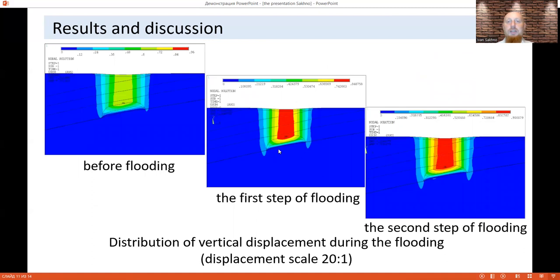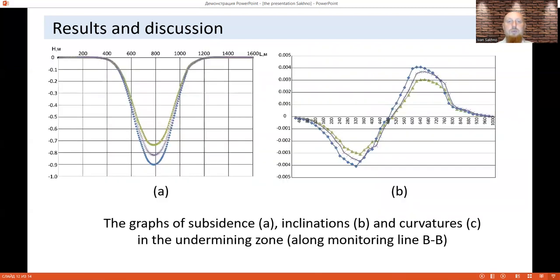In the next stage of modeling, flooding of the longwall goaf was simulated in two stages. The simulation results are shown on the slide. The graphs of subsidence and inclination are shown in the next slide. The graph shows that after the first step of flooding, the maximal subsidence increased by 821 mm, by 12%. After the second step of flooding, by 900 mm, by 22%. At the same time, the length of subsidence trough during flooding increased by only 5 m, about 1.3%.